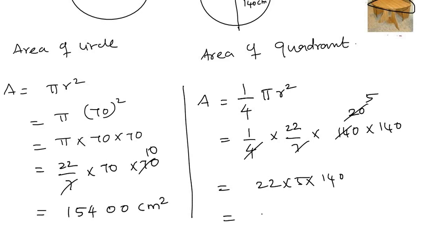So multiply: 1, 5, 4, 0, 0. This is 15400 centimeter square.